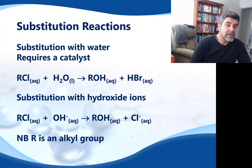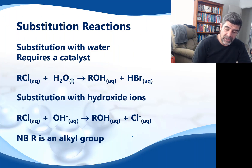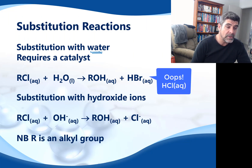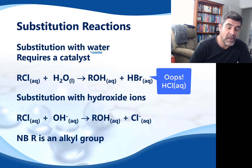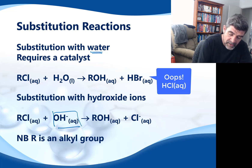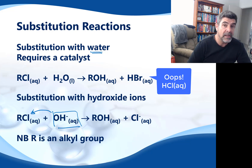Substitution reactions can actually occur under two different types of conditions. The first is the substitution reaction with water, as I just described. But it can also occur in a solution that contains hydroxide ions. The hydroxide ions will again go in and substitute for the halogen, which in this case is chlorine.